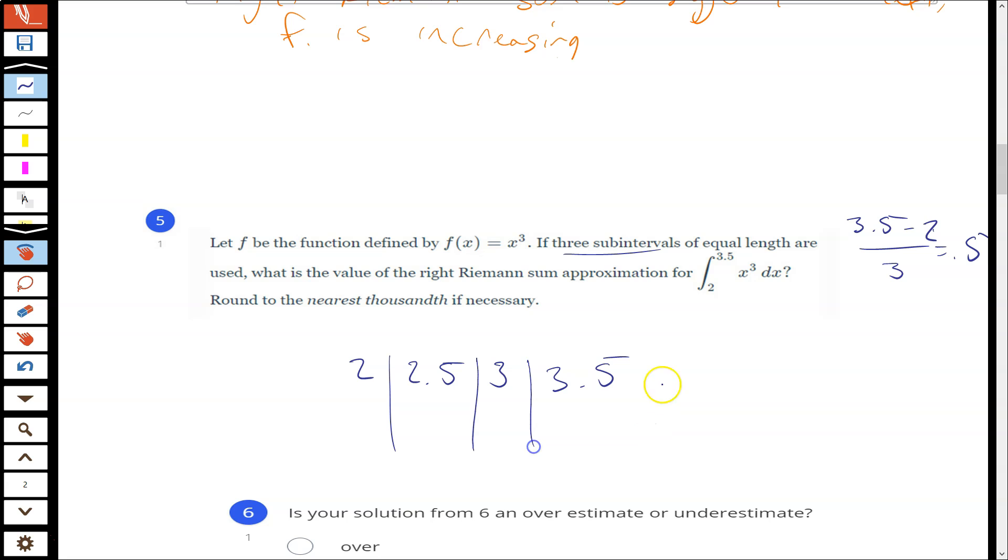Then, x, f of x. So we'll figure out what each of these is. 2 to the third power is 8. And then I'm going to reach for my calculator for the rest of these. We see our change in x is 0.5 every time. But I'm actually going to write that out so you can see which intervals I'm using with which y values here.